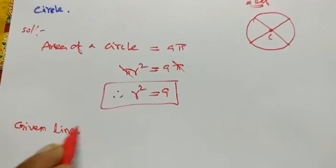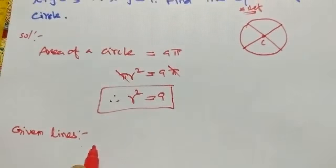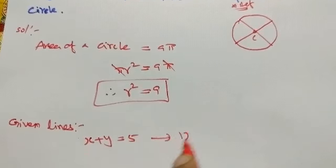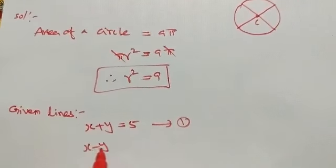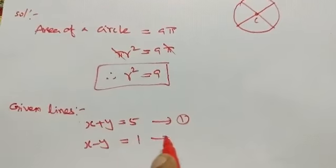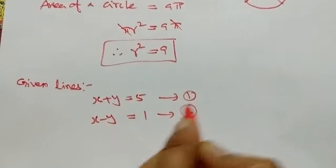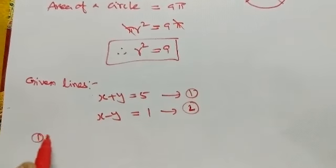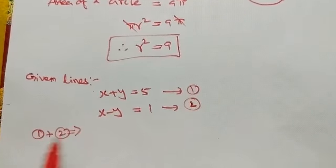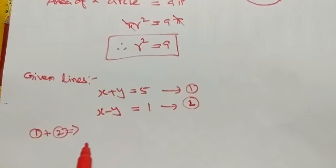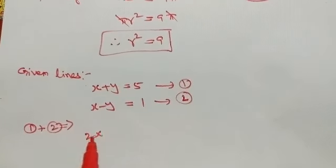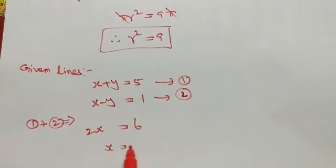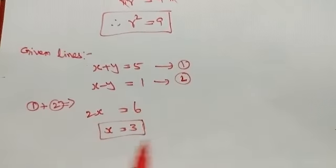Given lines: x plus y equal to 5 as equation 1, and x minus y equal to 1 as equation 2. Add equations 1 and 2: plus y minus y cancels, 2x equal to 6, so x equal to 3.